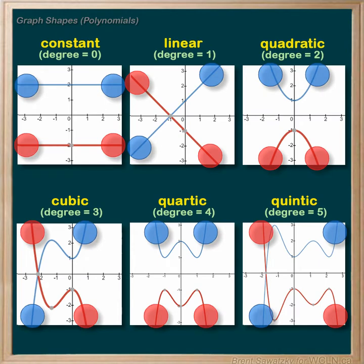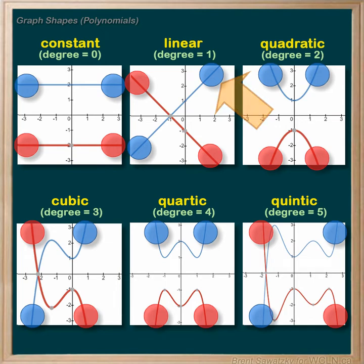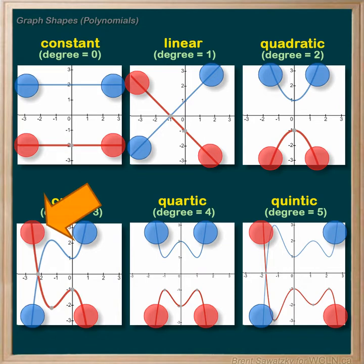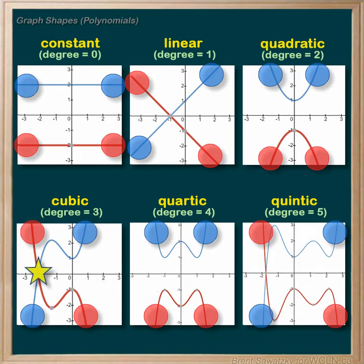Trend number two is related to trend number one. It helps us know what the minimum number of x-intercepts are in polynomial relationships. An x-intercept is also called a solution when dealing with equations. If positive relationships with odd degrees all start in the bottom left and end in the top right, then getting from the bottom to the top means they must cross the x-axis at least once. Similarly, a negative odd degree relationship must get from the top to the bottom, so it must also cross the x-axis at least once. The minimum number of x-intercepts for an odd degree polynomial, whether positive or negative, is one.